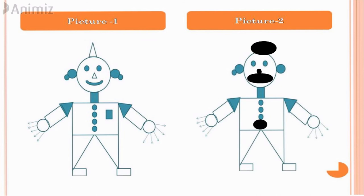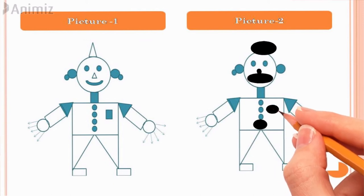Nice. Then it has one pocket, but in the second picture there is no pocket. Let's mark it. Very good.